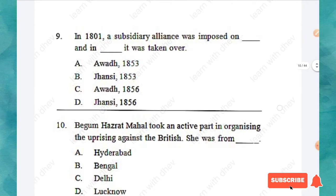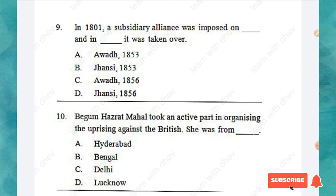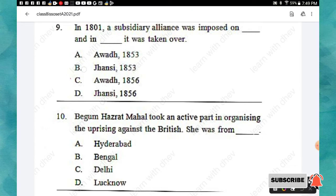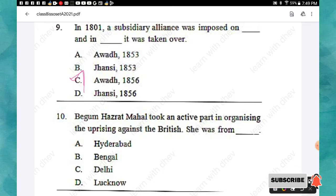Question 9: In 1801, a subsidiary alliance was imposed on ___ and in ___ it was taken over. Options: Awadh 1853, Jhansi 1853, Awadh 1856, Jhansi 1856. The right answer is option C: the subsidiary alliance was imposed on Awadh in 1801 and it was taken over in 1856. Question 10: Begum Hazrat Mahal took an active part in organizing the uprising against the British. She was from — Hyderabad, Bengal, Delhi, or Lucknow? The right answer is option D: Lucknow.